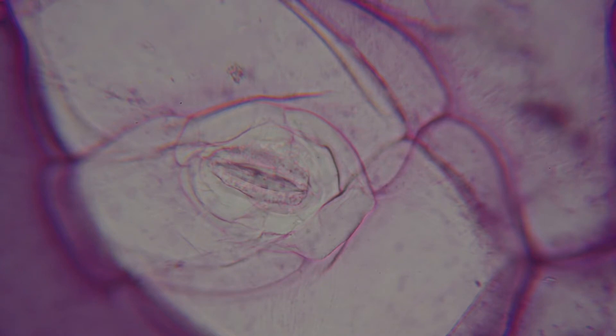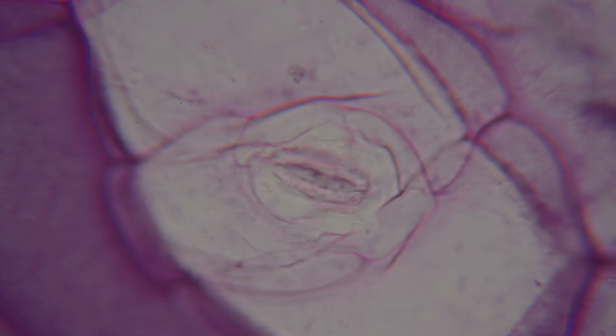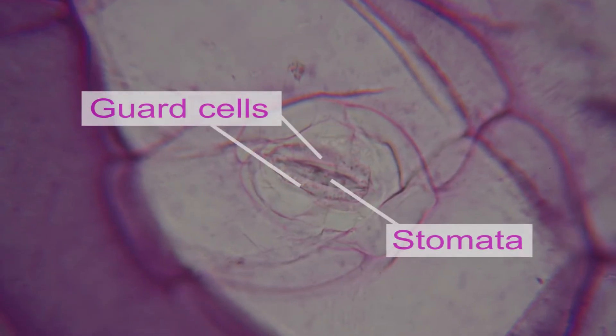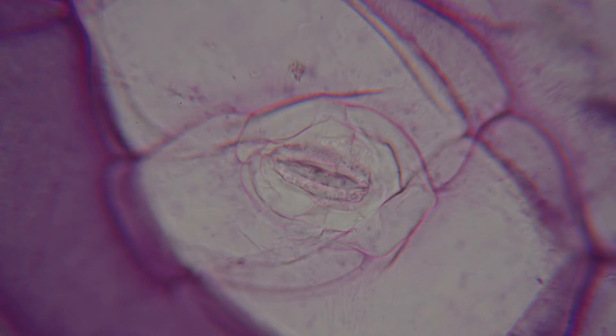The leaf has been stained and what we're looking at here in the center of the screen is this stomata. It would usually open and close, letting carbon dioxide and oxygen gas in and out of the plant as it photosynthesizes.